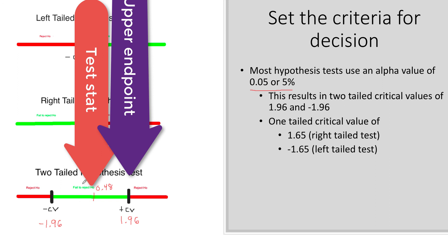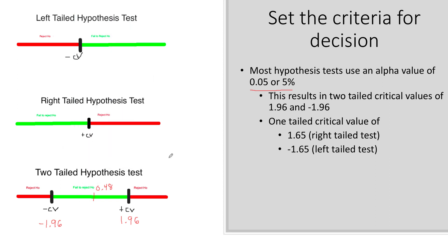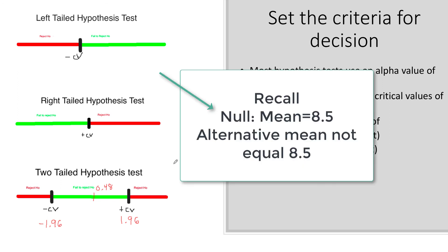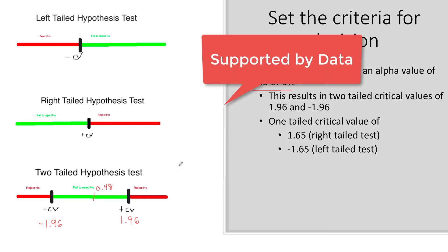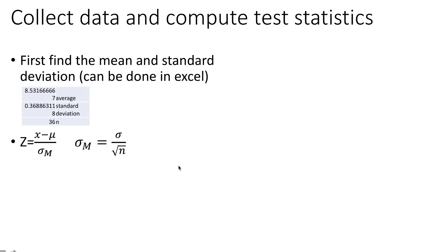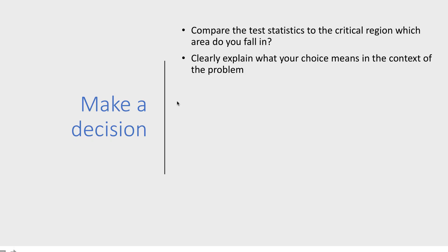This is in the green region, which means I fail to reject the null hypothesis. Keeping in mind, the null hypothesis was that the average time per mile was equal to 8 minutes and 30 seconds. So my last step is to make my decision and clearly explain this choice.